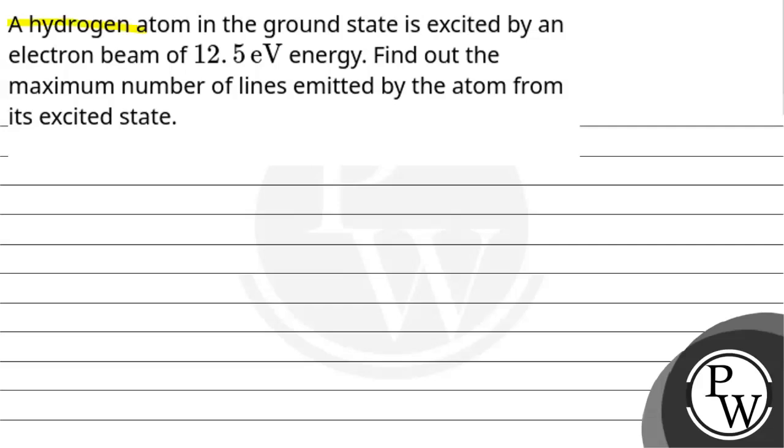Hello Bacho. Let us read this question. A hydrogen atom in the ground state is excited by an electron beam of 12.5 electron volt energy. Find out the maximum number of lines emitted by the atom from its excited state.